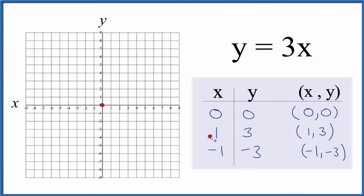We have x equals 1 and y equals 3, right here. Then x is -1 and y is -3. You can see those points line up.